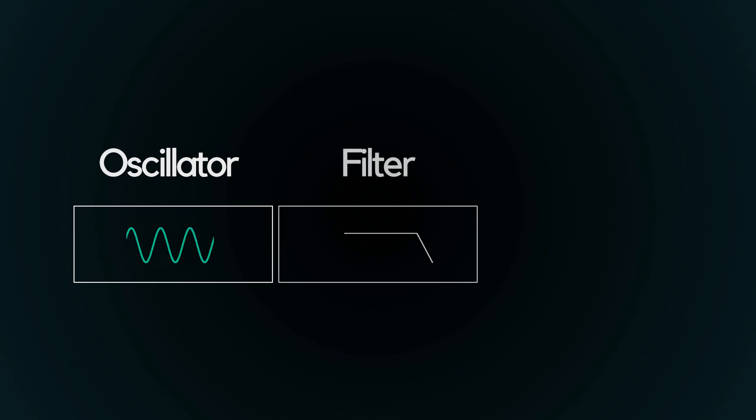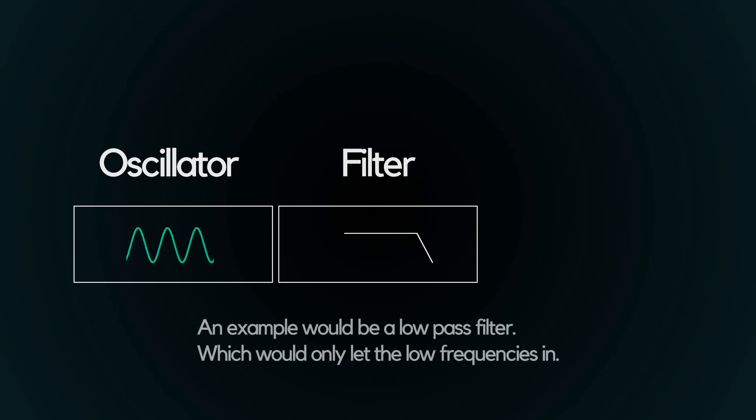Synthesizers also use a filter which changes the frequencies that are allowed through the circuit, which in turn changes the timbre of the sound. An example of this would be a low-pass filter which only allows the particularly low frequencies to pass through, hence the name.